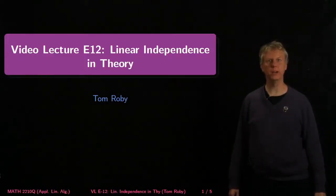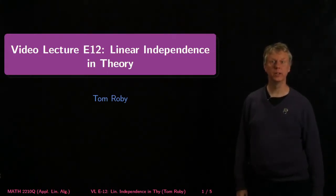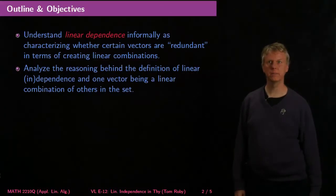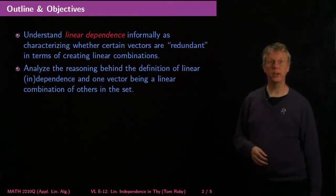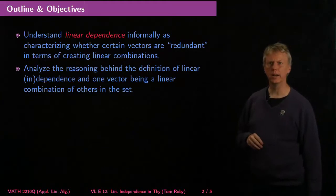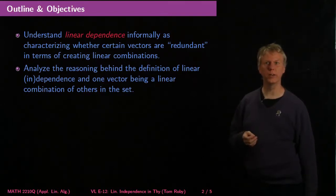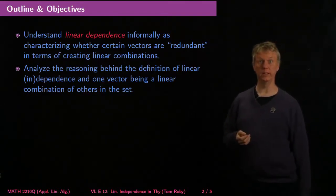Welcome to video lecture E12. This one is on linear independence in theory. This is the second video lecture on linear independence and dependence, and it will be a slightly more theoretical take, but also with some practical implications. We want to understand linear independence informally as characterizing whether certain vectors are redundant in terms of creating linear combinations.